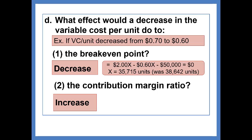The break-even point would be 2x minus 0.6x minus $50,000, or 35,715 units of service. You can compare this to what it had been previously, which was 38,462 units of service. So, this is, in fact, a decrease.